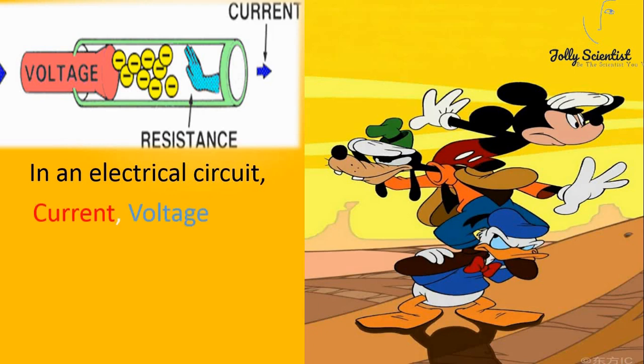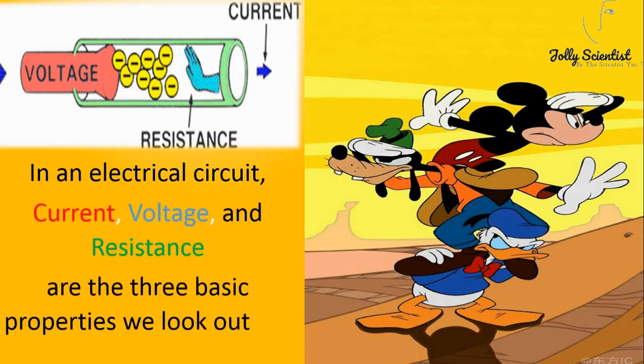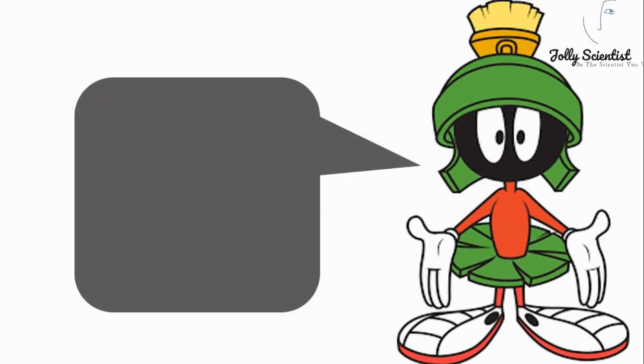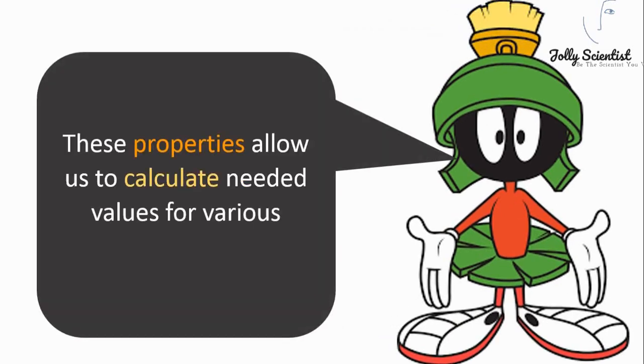In an electrical circuit, current, voltage, and resistance are the three basic properties we look out for. These properties allow us to calculate needed values for various elements in a circuit.